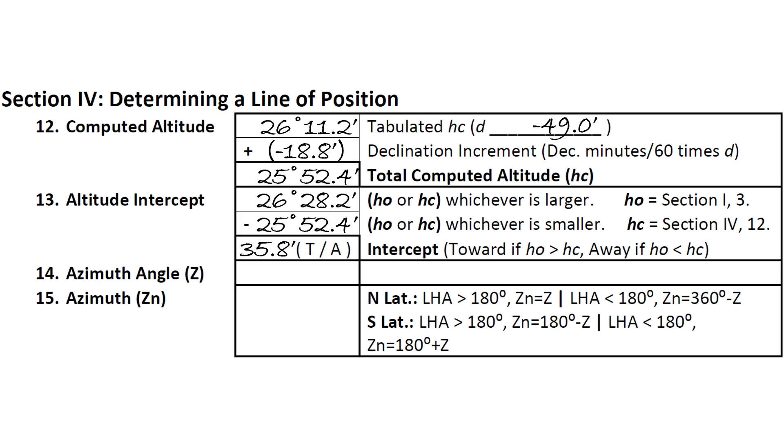We need to mark if our intercept is toward or away on the sight reduction form. In our example, we see that HO is greater than HC, so we circle toward on the sight reduction form.